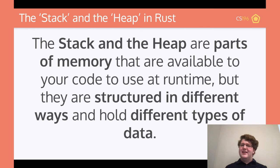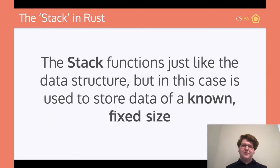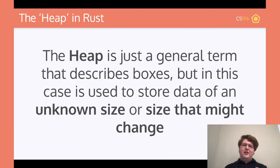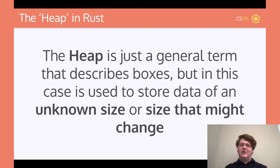Let's talk about the stack and the heap in Rust. The stack and the heap are parts of memory available to your code, but they're very differently set up and used in different circumstances. The stack functions just like the stack data structure, but is used for storing data of a known and fixed size. The heap, on the other hand, is a general term for the rest of memory. It lets you put things into boxes anywhere — you can add boxes, remove boxes, or change what's in the boxes — allowing you to store data of unknown sizes or change the size of data over time.